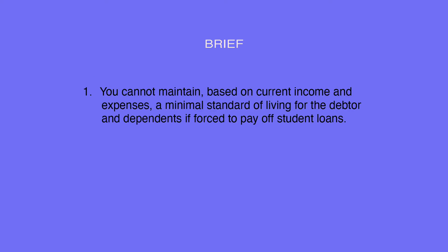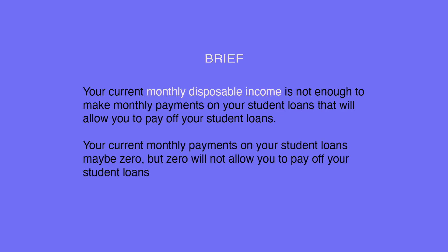You are trying to prove three things. One, you cannot maintain, based on current income and expenses, a minimal standard of living for the debtor and dependents if forced to pay off student loans. In other words, your current monthly disposable income is not enough to make monthly payments on your student loans. Your current monthly payments may be zero, but zero will not allow you to pay off your student loans.